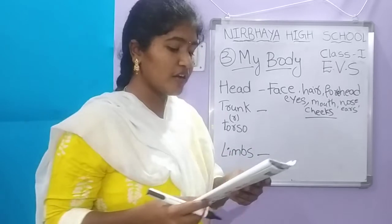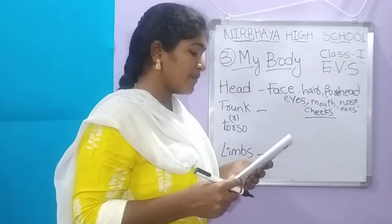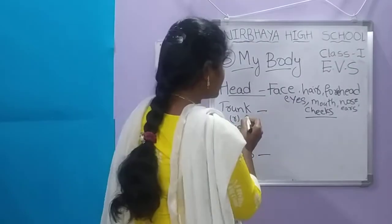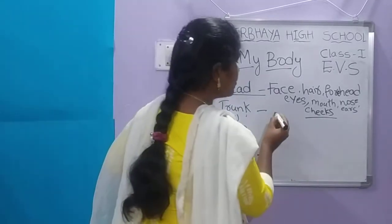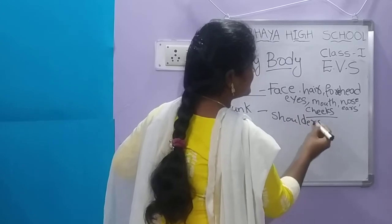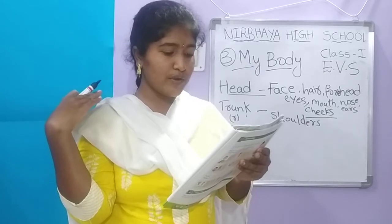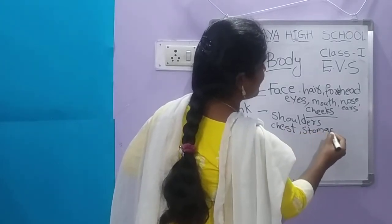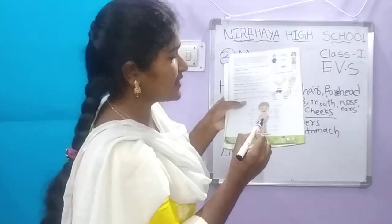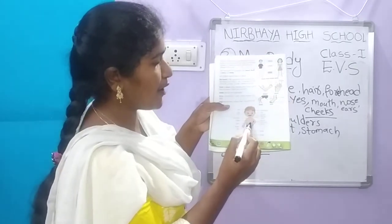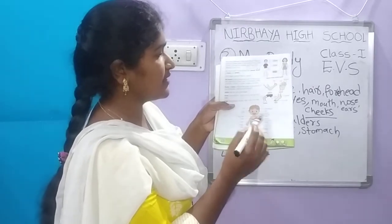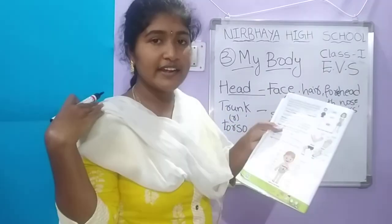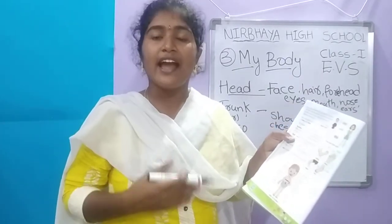Trunk or torso is the middle part of the body. It has shoulders, chest, and stomach. Head is the uppermost part; trunk is the middle part. These are our shoulders. Chest — C-H-E-S-T. Stomach — S-T-O-M-A-C-H. The trunk contains shoulders, chest, and stomach.